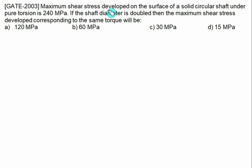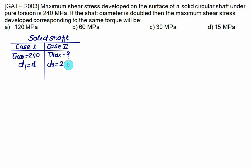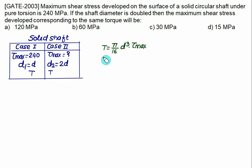The maximum shear stress on the surface of a solid circular shaft under pure torsion is 240 MPa. If the shaft diameter is doubled with the same torque, we need to find the new maximum shear stress. In the initial case, τ_max1 = 240 MPa with diameter d1 = d. In the second case, d2 = 2d, and torque remains the same.